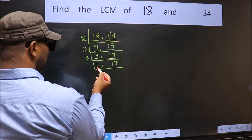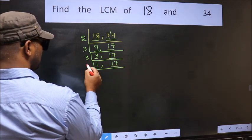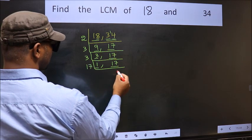Now we got 1 here. So focus on the other number 17. 17 is a prime number. So 17 ones, 17.